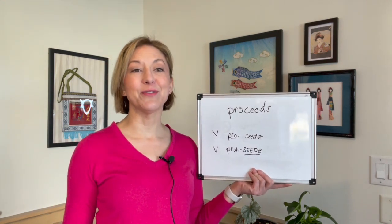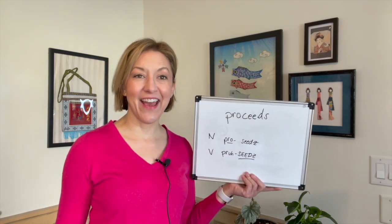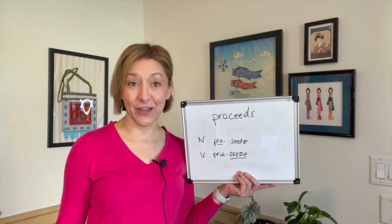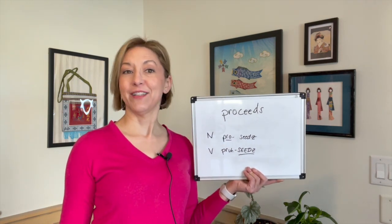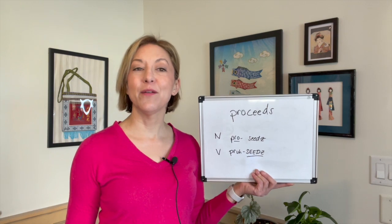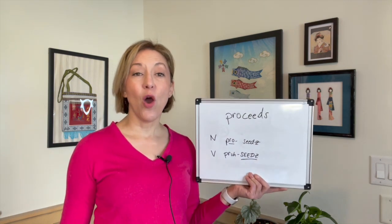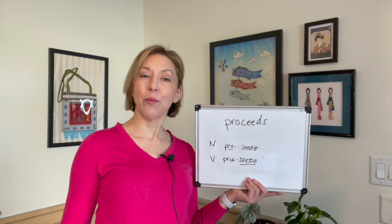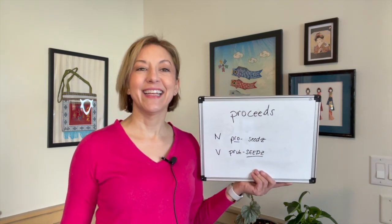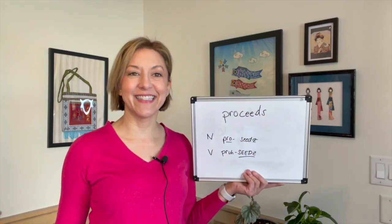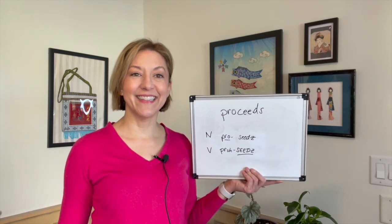To make the long E, you're going to smile and your tongue is going to be high and flat in your mouth. End with that D by touching the tip of your tongue to the back of your top front teeth and letting it pop down. When it pops down, let that air move out of your mouth again for that Z sound. Seeds, seeds, seeds.